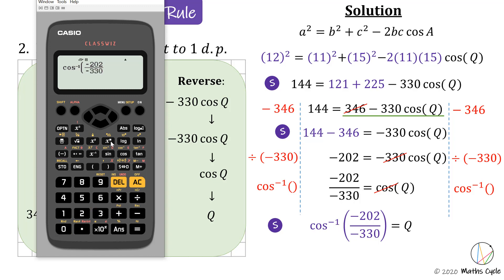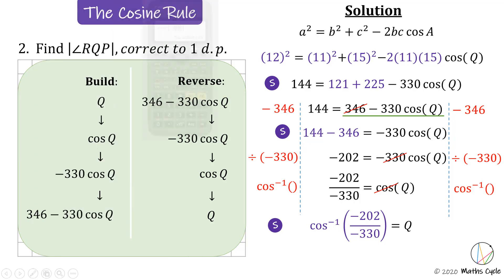Arrow out of the fraction, close brackets, and press equals — giving 52.2569. The question asks for one decimal place: after the point two I have a five, so I round up to 52.3 degrees. The measure of angle OQP is 52.3 degrees.